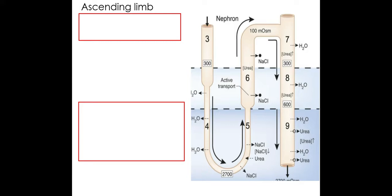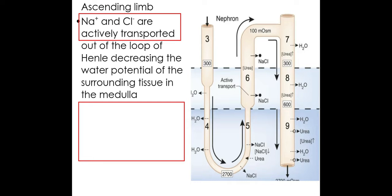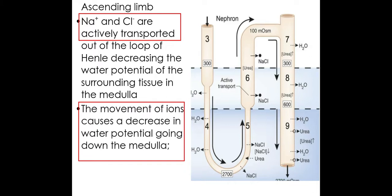Starting in the ascending limb: sodium and chloride ions are actively transported out of the loop of Henle into the surrounding tissue in the medulla. As a result, this decreases the water potential of the surrounding tissue. The water potential of the medulla decreases as you go further down, because of this movement of ions into the area.